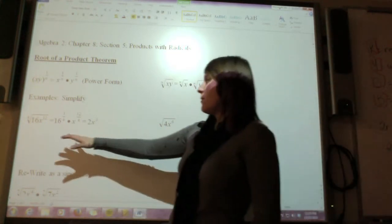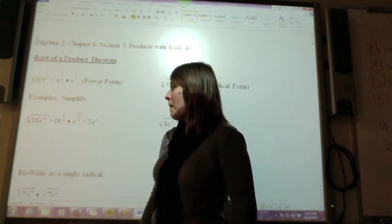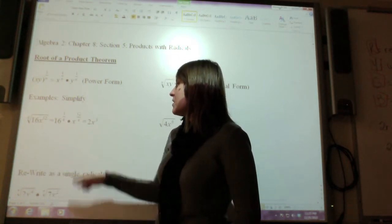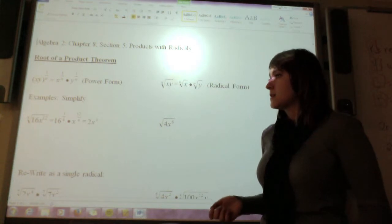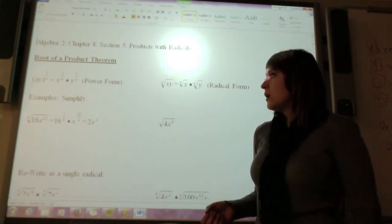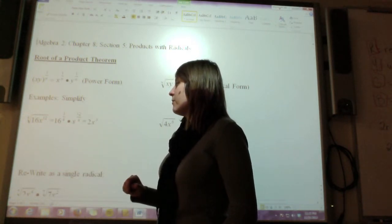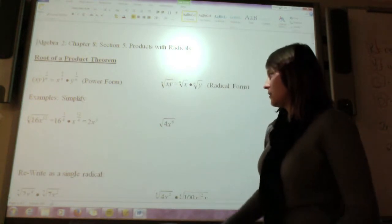So for example, if I wanted to simplify the fourth root of 16x to the 12, I can split that up into the fourth root of 16 times the fourth root of x to the 12, which I rewrite as x to the 12 over 4. And the fourth root of 16 is just 2, and x to the 12 over 4 simplifies to x to the third, so my answer there would be 2x to the third.